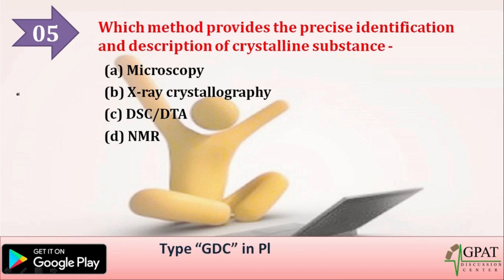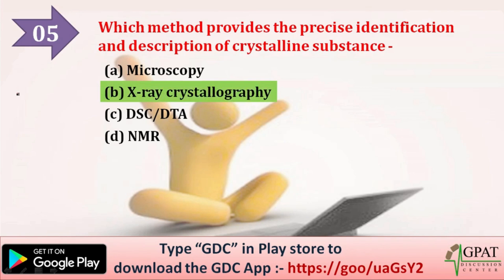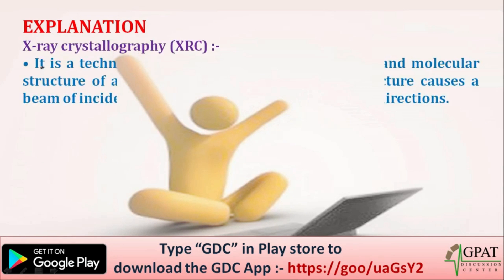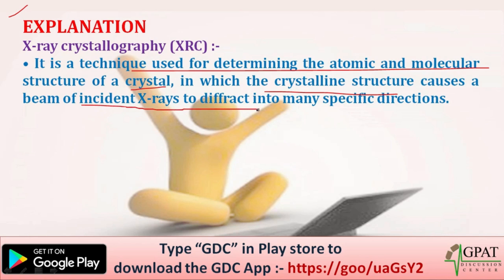The next question: which method provides the precise identification and description of a crystalline substance? The correct answer is X-ray crystallography. It is a technique used for determining the atomic and molecular structure of a crystal, in which the crystalline structure causes a beam of incident X-rays to diffract into many specific directions.